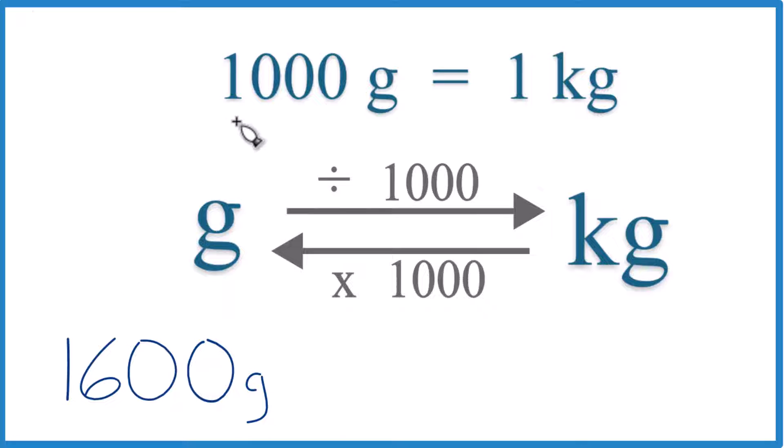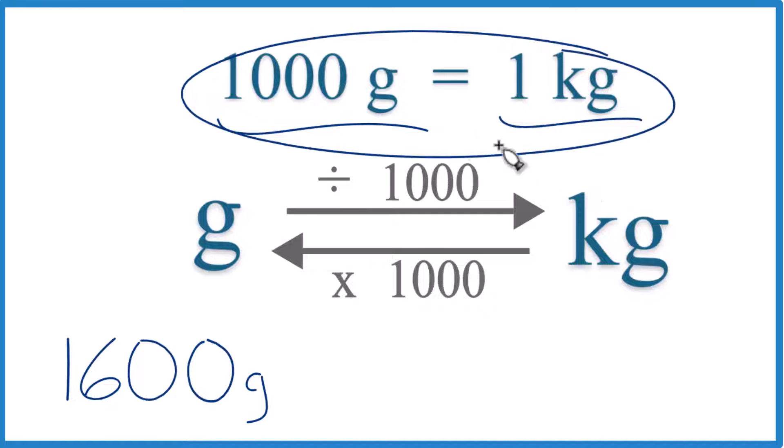First off, you need to memorize that there are 1,000 grams in one kilogram. This is a conversion factor, and you use it to convert from grams to kilograms and kilograms to grams.